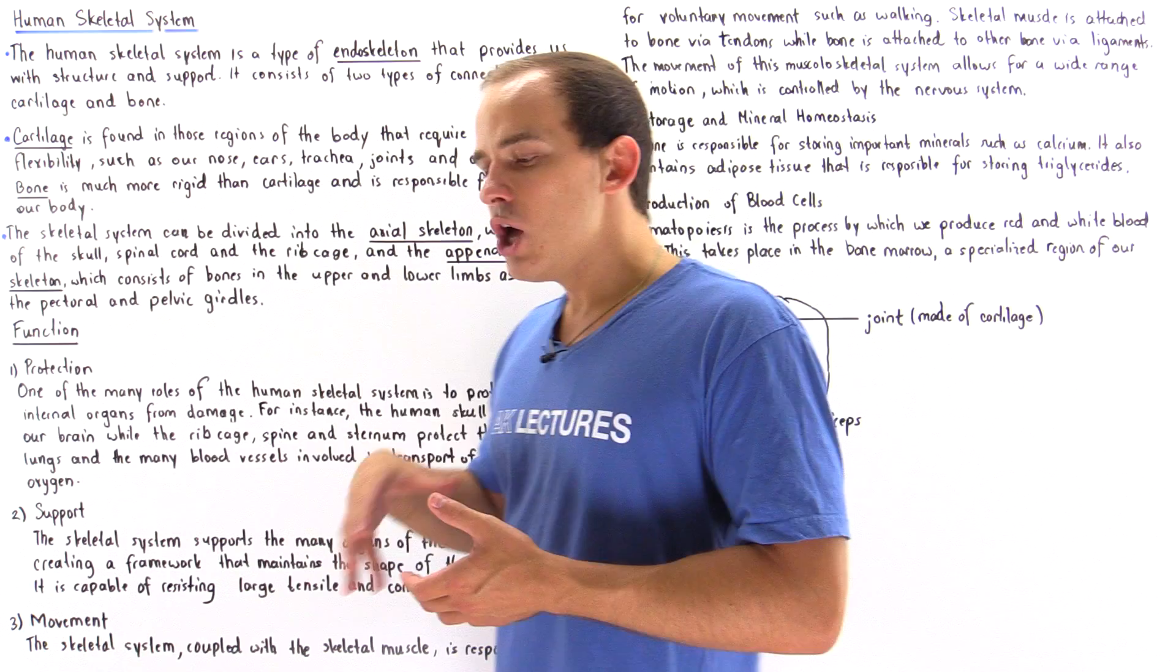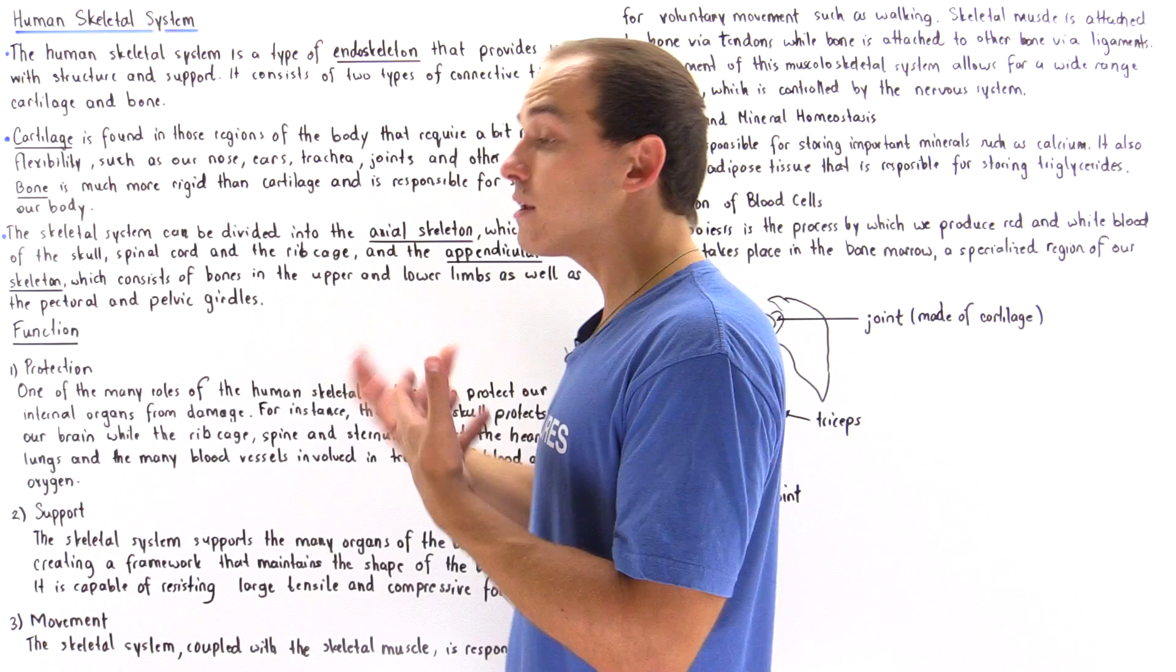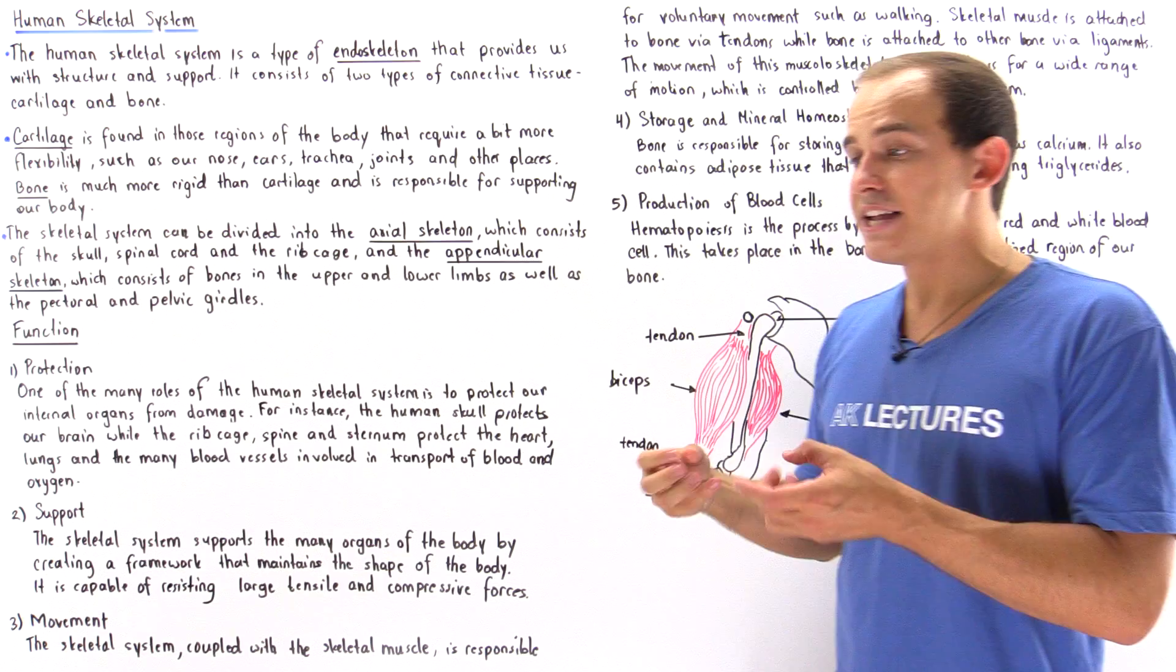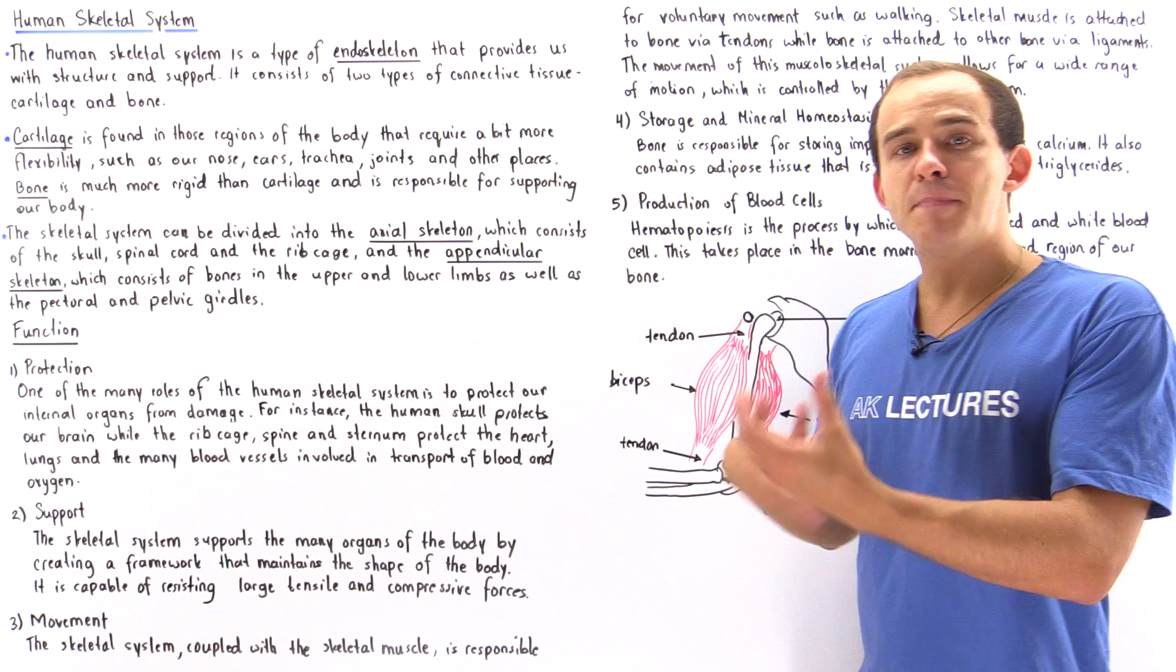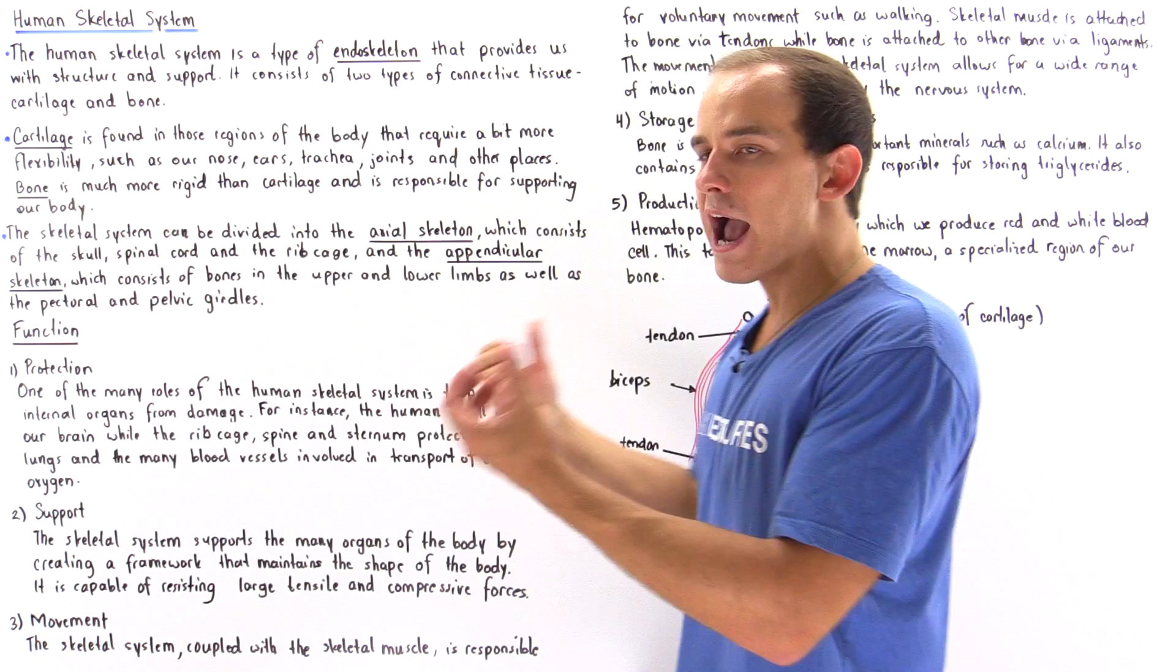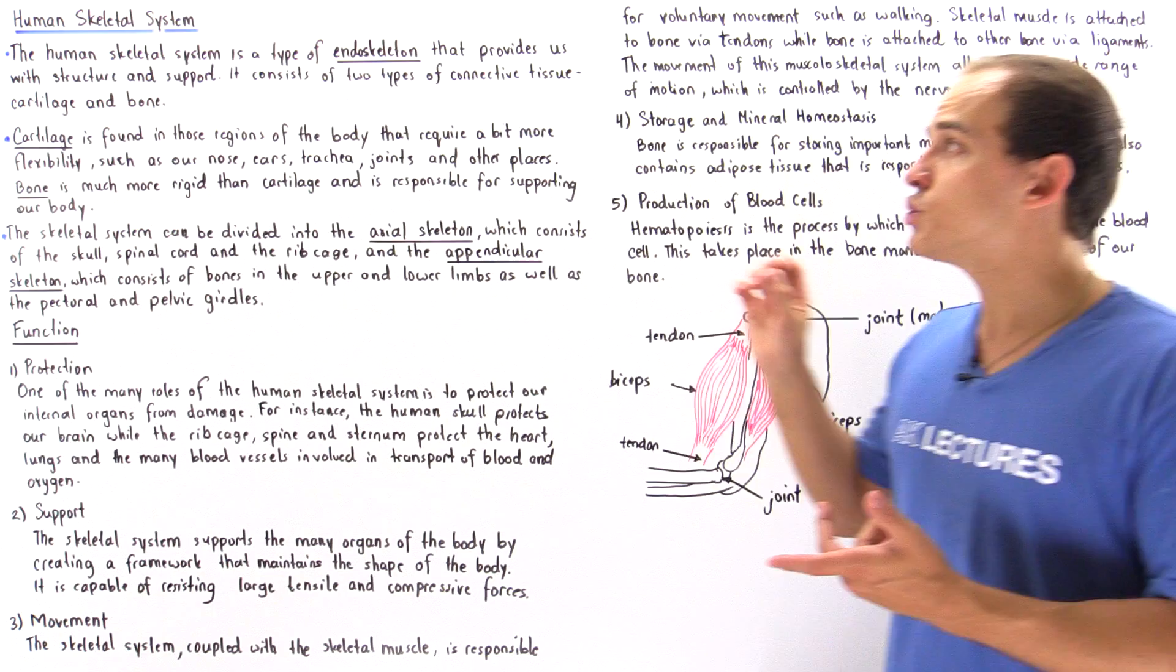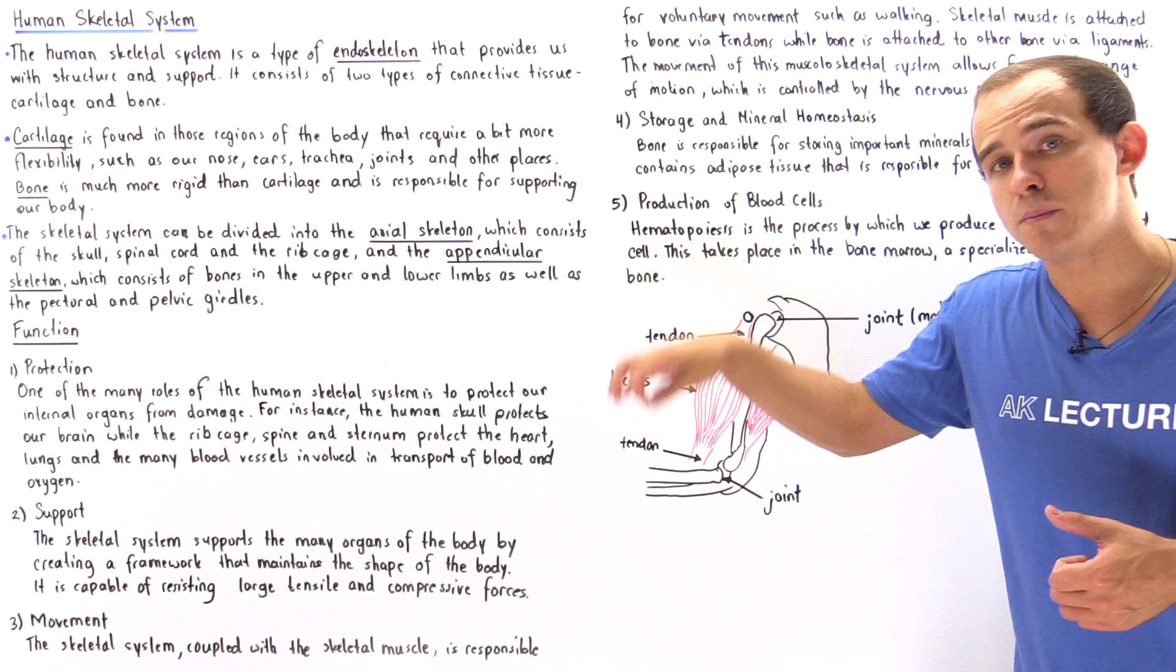Now what about movement? One of the predominant functions of our skeletal system is basically bodily movements that are voluntary. So the skeletal system coordinates with the muscular system, skeletal muscle, as well as with the nervous system to basically coordinate different types of voluntary movements such as walking, running, swimming, riding a bicycle, and so forth. Anytime we can voluntarily move our body, this involves not only skeletal muscle and the nervous system, it also involves our skeletal system.